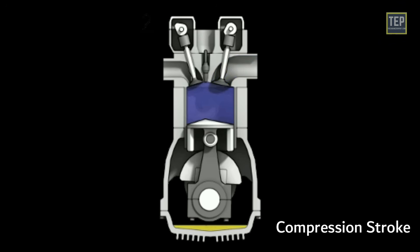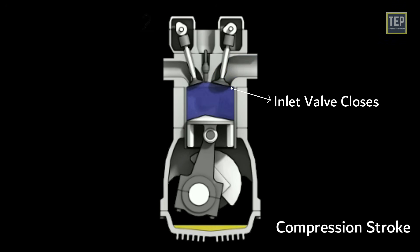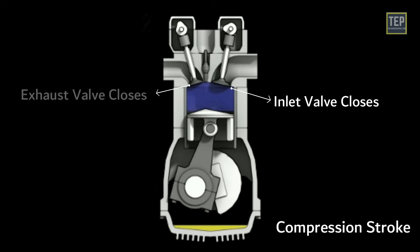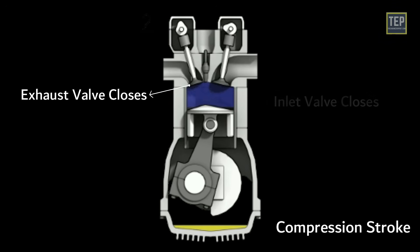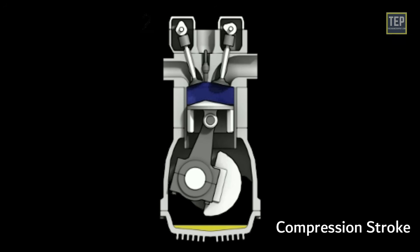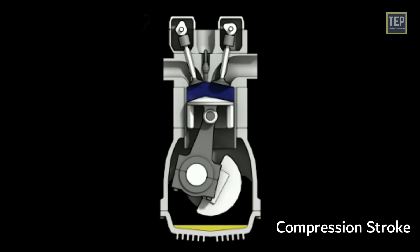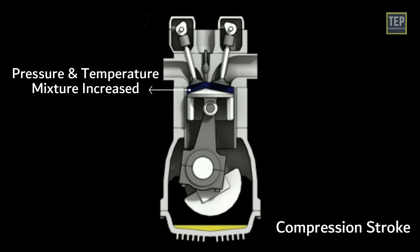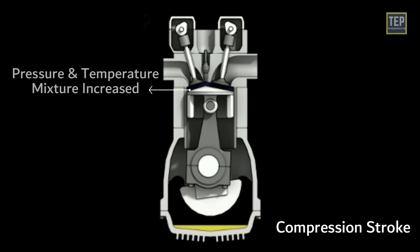Compression stroke: The piston moves up after the intake stroke. The inlet valve closes, and the exhaust valve also remains closed. The piston compresses the fuel-air mixture by pushing it upward into the clearance space at the top of the cylinder. The pressure and temperature of the mixture increase during compression.